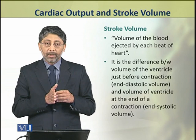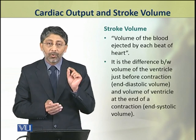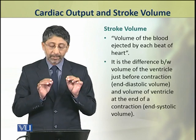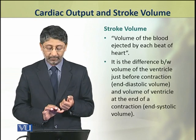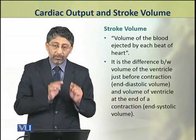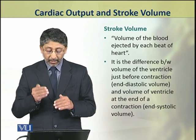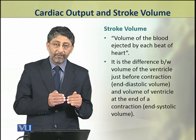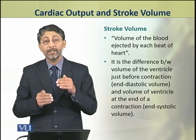In comparison to cardiac output, stroke volume is the volume of blood which is ejected from the heart by each beat. It is the difference between the volume of the ventricle just before contraction, which is called end diastolic volume, and the volume of the ventricle at the end of a contraction, which is called end systolic volume.